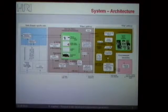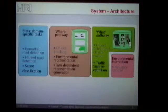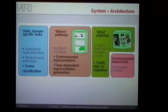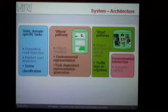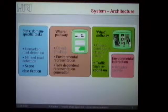This is the full system architecture. I will simplify this a little bit so you do not get bothered too much with details. The system contains four main building blocks. The first are the static domain-specific tasks — these are tasks tailored for driver assistance systems, including unmarked road detection and marked road detection approaches. I will not go into detail on those here.